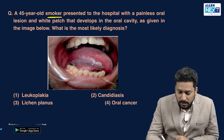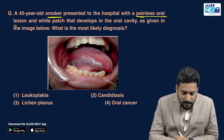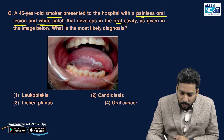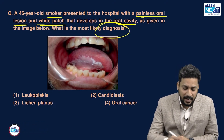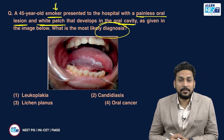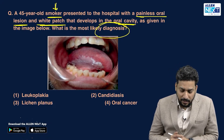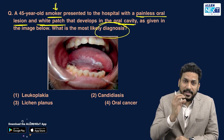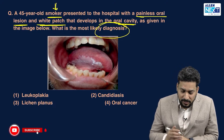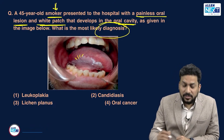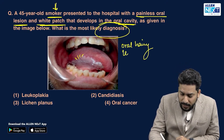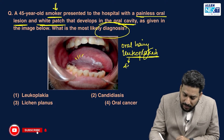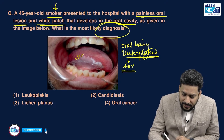A 45-year-old smoker presents with a painless oral lesion — a white patch developing in the oral cavity. Smoking is a predisposing factor for various malignancies as well as leukoplakia. The whitening is only on the lateral part of the tongue, which also has hairy projections, pointing towards oral hairy leukoplakia, which is caused by the Epstein-Barr virus. The common site is the lateral tongue.